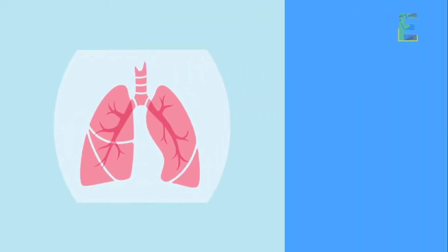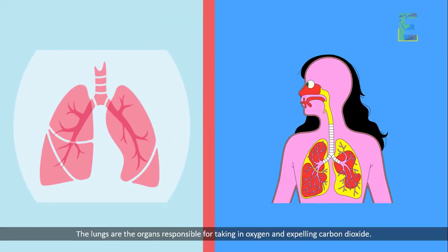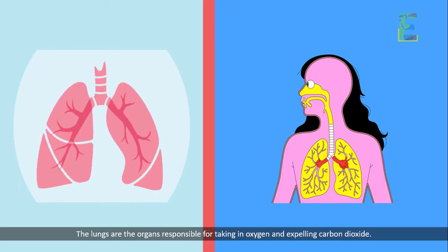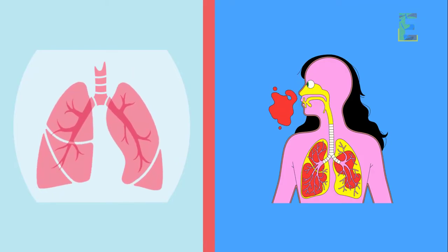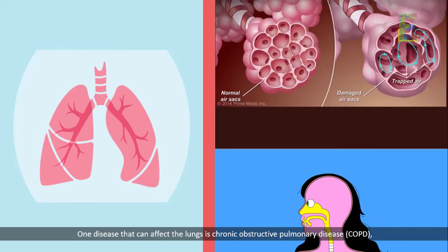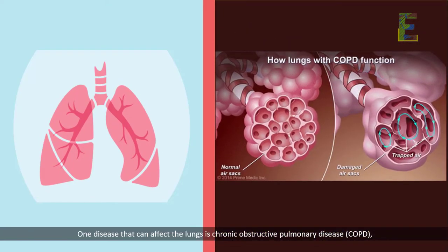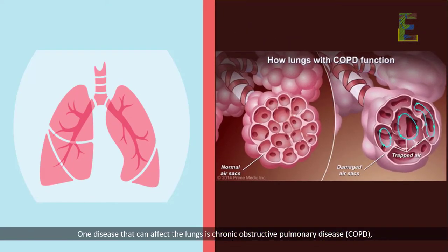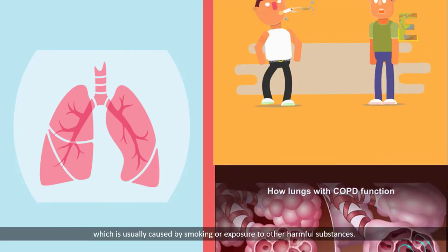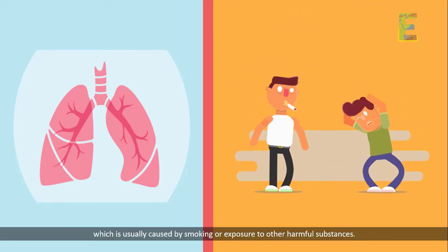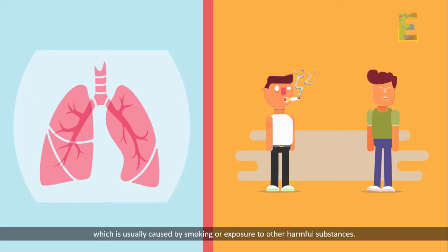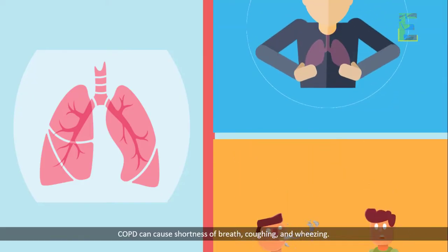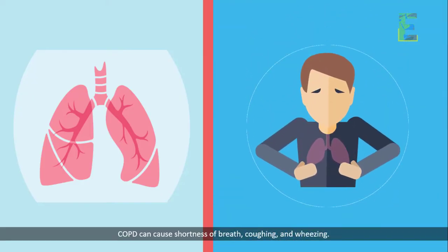Next, let's move on to the lungs. The lungs are the organs responsible for taking in oxygen and expelling carbon dioxide. One disease that can affect the lungs is chronic obstructive pulmonary disease, COPD, which is usually caused by smoking or exposure to other harmful substances. COPD can cause shortness of breath, coughing, and wheezing.